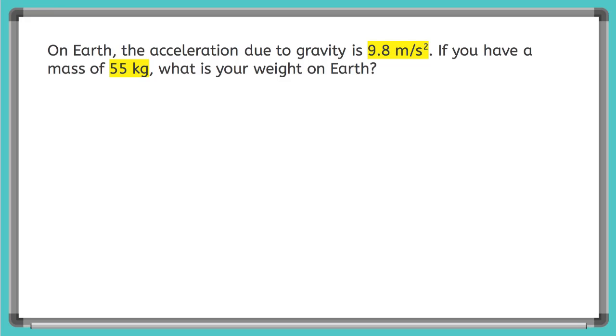Lucky for us, they tell us what little g on Earth is, 9.8 meters per second squared. And they've given us all of our values in SI units, so we can get started. First we write down our knowns.